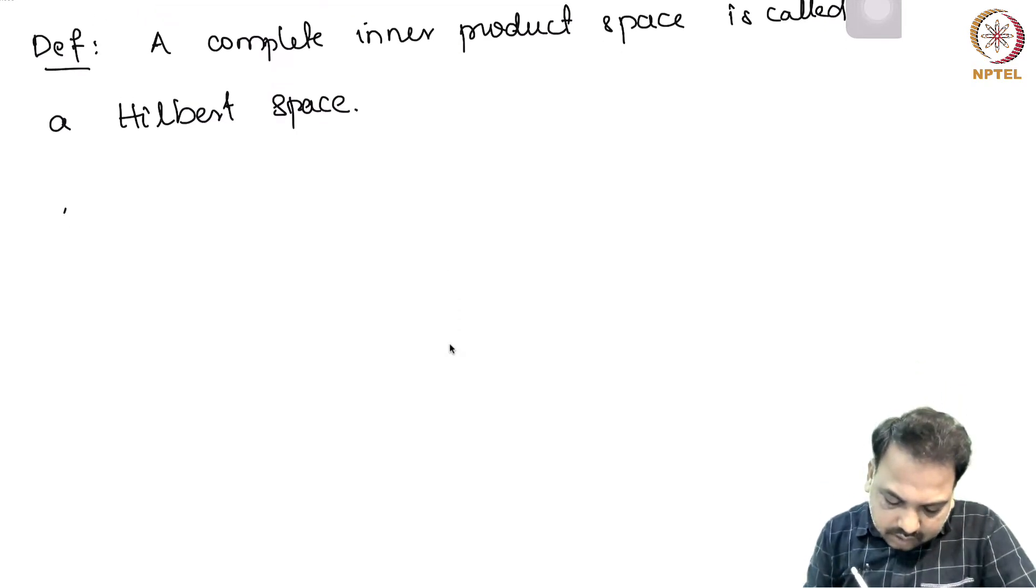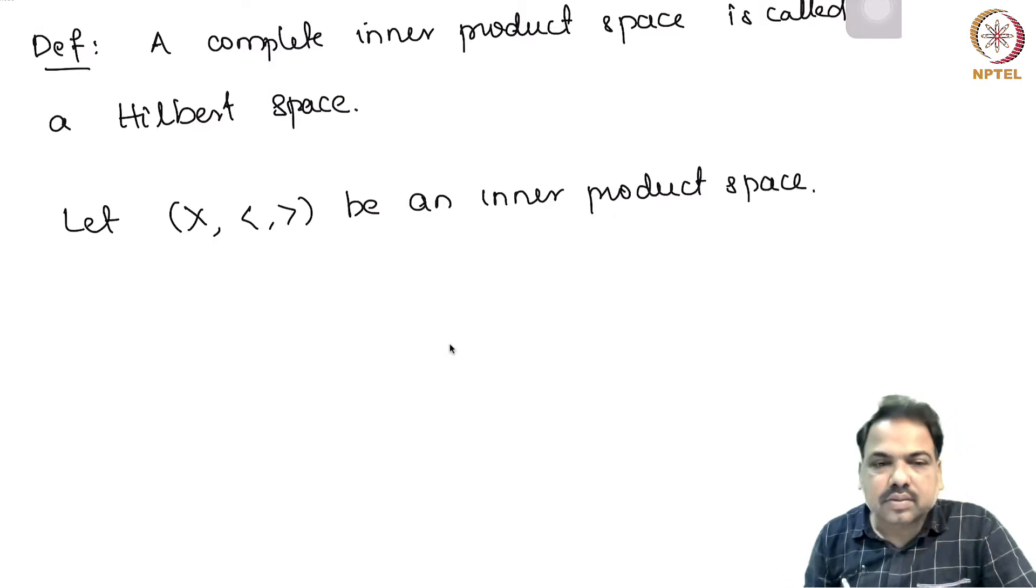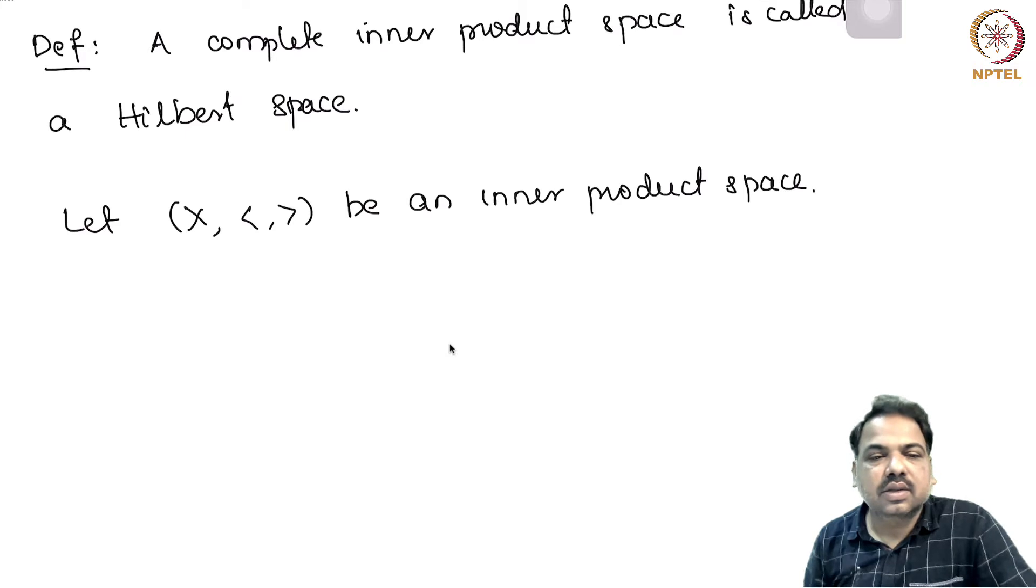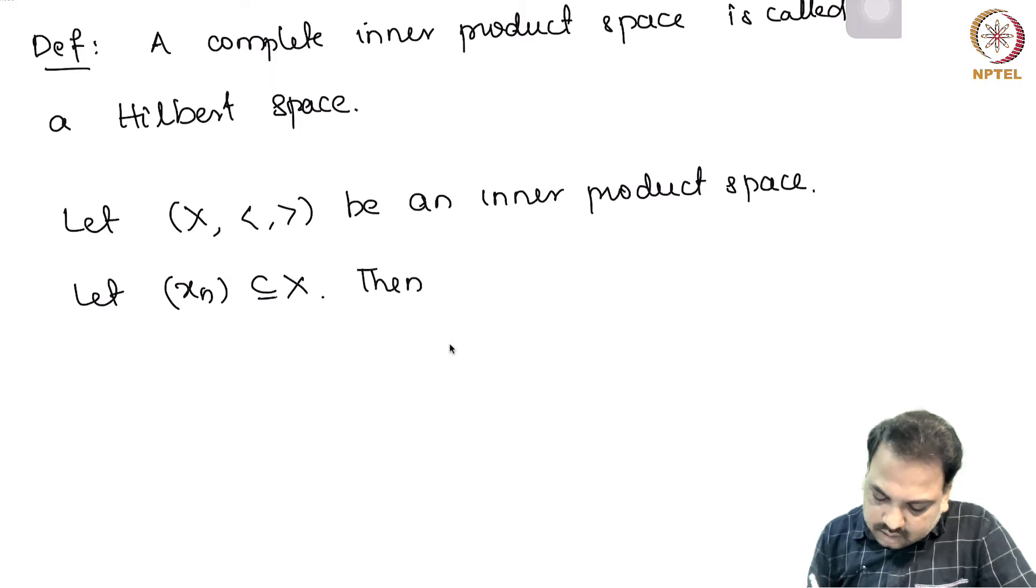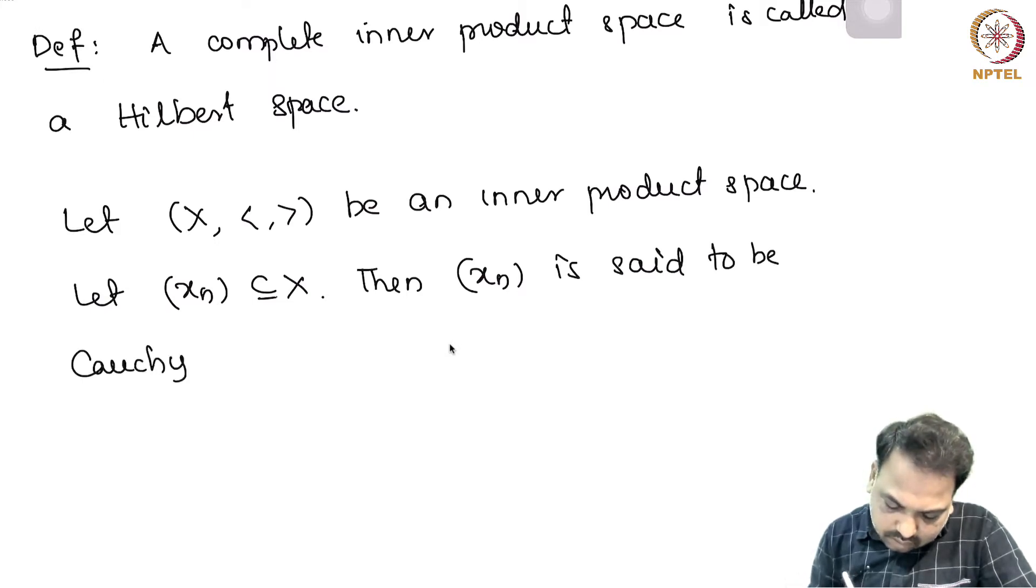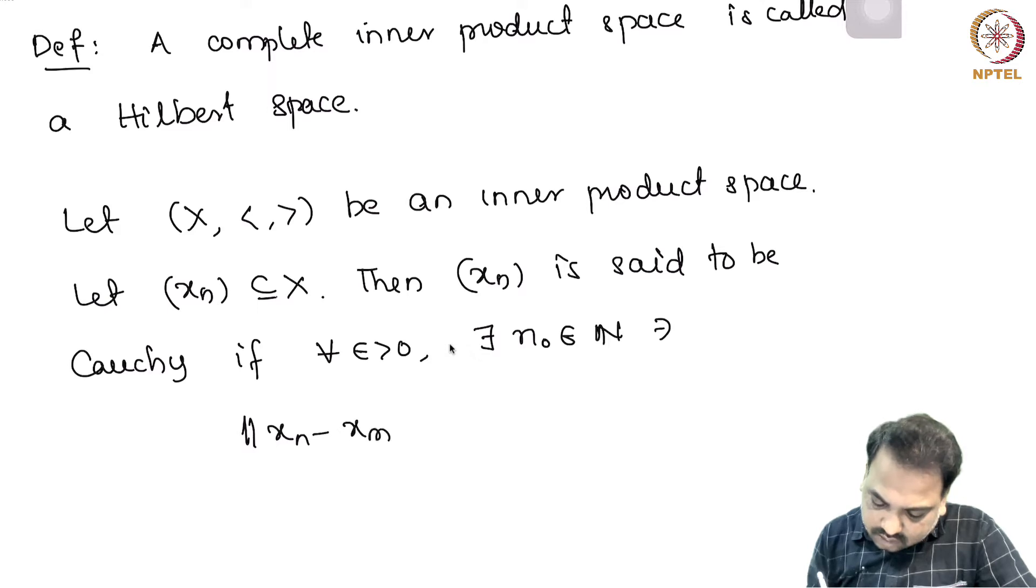Let X be an inner product space. When we say X is complete, that means every Cauchy sequence in X must be convergent. So let x_n be a sequence. Then x_n is said to be Cauchy if for every epsilon positive, there exists a natural number n_0 such that norm x_m minus x_n is less than epsilon for every m, n bigger than or equal to n_0.